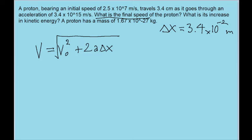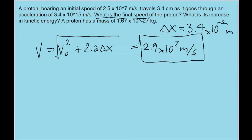If we plug all of this into a calculator, we will find a final speed of about 2.9 times 10 to the power of 7 meters per second. And that is our answer for the first part of the problem. But the second part of the problem asks for the increase in kinetic energy as it speeds up.